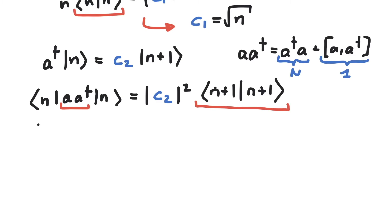Now we have the state n, then the operator n plus 1, and again the state n, and on the right-hand side, just c2. The eigenvalue of the number operator is always the number that's inside the vector here. So we have n plus 1 times the inner product of n, and this is c2 squared.